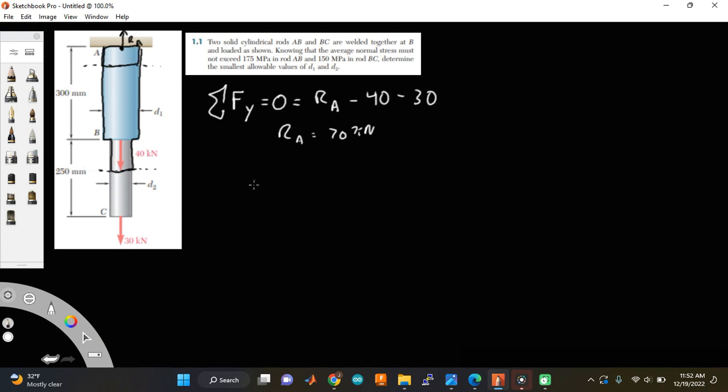So let's draw the first one. The first one is relatively straightforward. It's just the top part, which has reaction A, which we found before to be 70 kilonewtons. And because we took a section, there has to be a normal force in this thing, NAB.